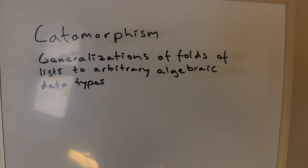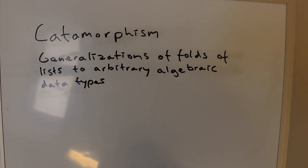We'll start with an initial working definition: a catamorphism is a particular type of recursive function over a recursive data structure.